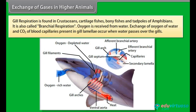Gill respiration is found in crustaceans, cartilaginous fishes, bony fishes and tadpoles of amphibians. It is also called branchial respiration. Oxygen is received from water; exchange of oxygen from water and CO2 from blood capillaries present in gill lamella occurs when water passes through the gills.